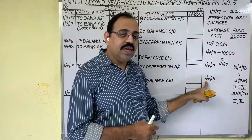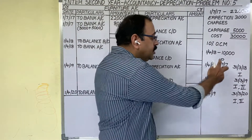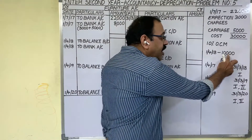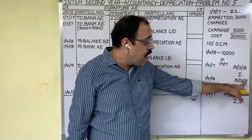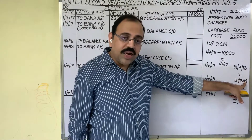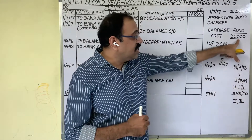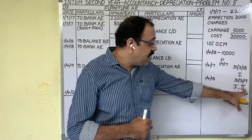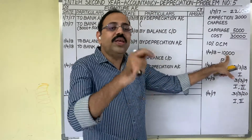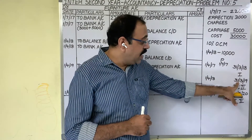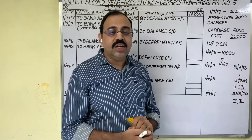Now come to the second year. In the second year, on 1st April 2018 they purchased another furniture for 10,000 rupees. The second year's last date is 31st March 2019. On that day we have two furnitures: first furniture cost is 30,000 and second furniture cost is 10,000; both are used for the full year.